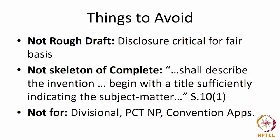It should not be a skeleton of the complete, because Section 10 states that the specification shall describe the invention, beginning with a title sufficiently indicating the subject matter — so it has to describe the invention. There is no provisional for divisional, PCT, or convention applications. A PCT application under the Patent Cooperation Treaty or a convention application under Section 135 cannot be filed by way of a provisional; all these applications require you to file a complete.